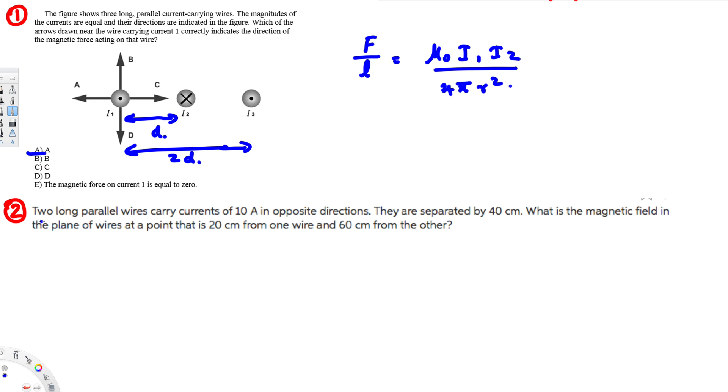Now let's look at the second question. Second question is asking: two long parallel wires carry currents of 10 ampere in opposite directions. They are separated by 40 centimeters. What is the magnetic field in the plane of the wire at the point that is 20 centimeters from one wire and 60 centimeters from the other?